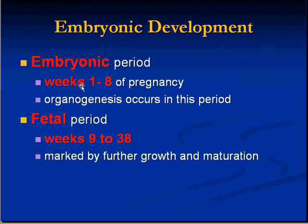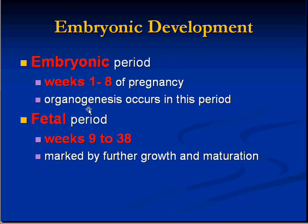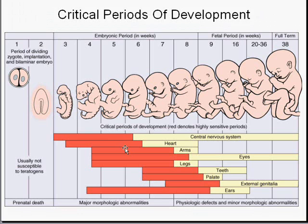Let's make a precise definition. An embryo is a structure between week one and week eight. After the eighth week, the developing human is no longer called an embryo — it's called a fetus — and it's called a fetus up until delivery at approximately 38 weeks. The critical period of development in which exposures to various things is most important would be in the embryonic period rather than the fetal period.